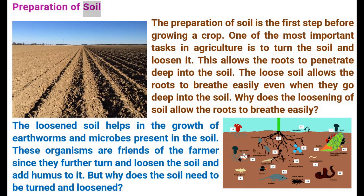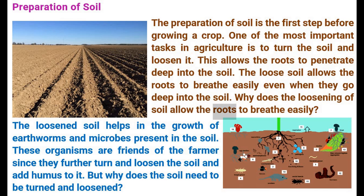Preparation of Soil. The preparation of soil is the first step before growing a crop. One of the most important tasks in agriculture is to turn the soil and loosen it. This allows the roots to penetrate deep into the soil. The loose soil allows the roots to breathe easily even when they go deep. The loosened soil also helps in the growth of earthworms and microbes present in the soil, which further turn and loosen the soil and add humus to it.